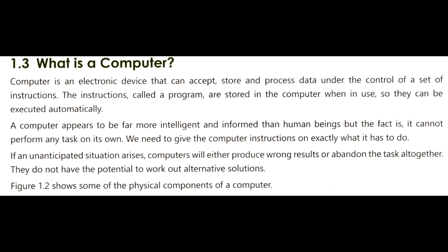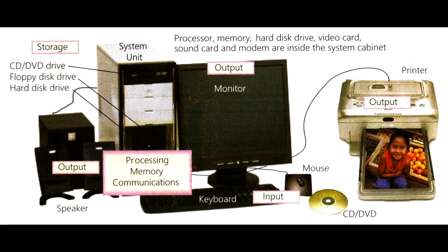An instruction is a set of code or set of programs given to the computer system. A computer system consists of two components: hardware and software. Hardware components such as keyboard, mouse, and speaker, whereas software components include operating system, device managers, and application programs such as Microsoft Office and PowerPoint. These hardware and software components are further classified into input devices, output devices, and storage devices.